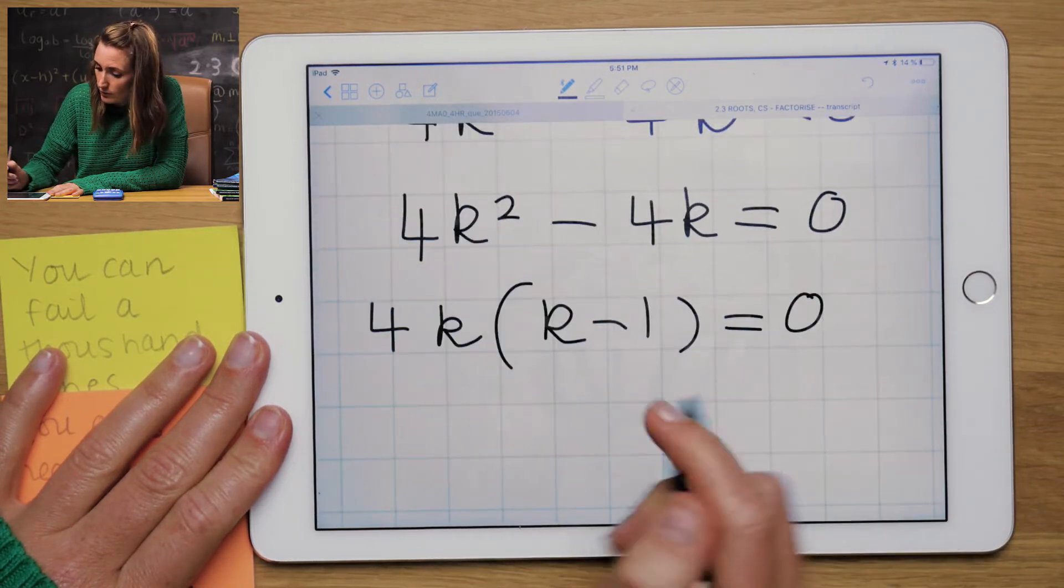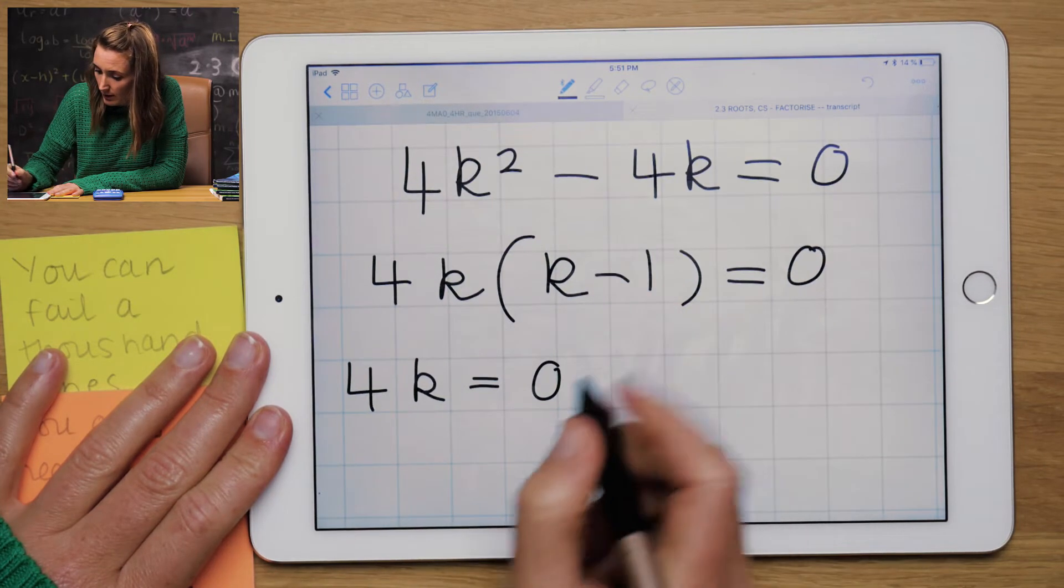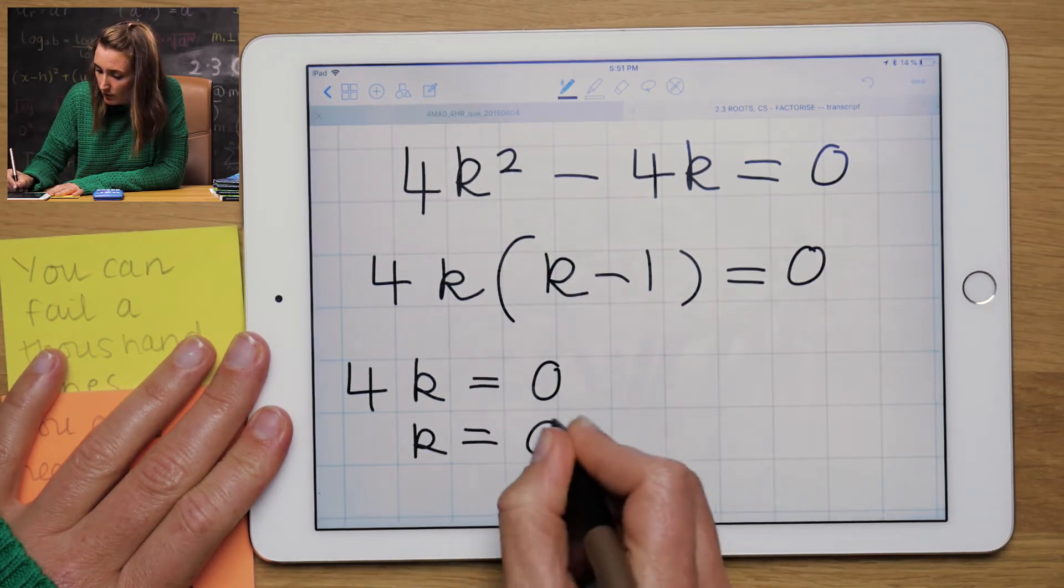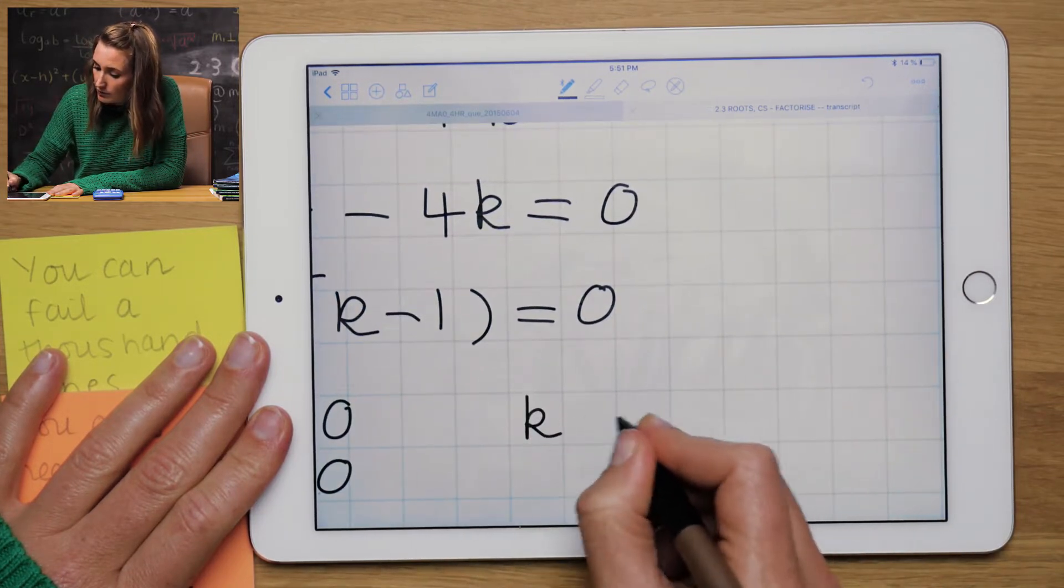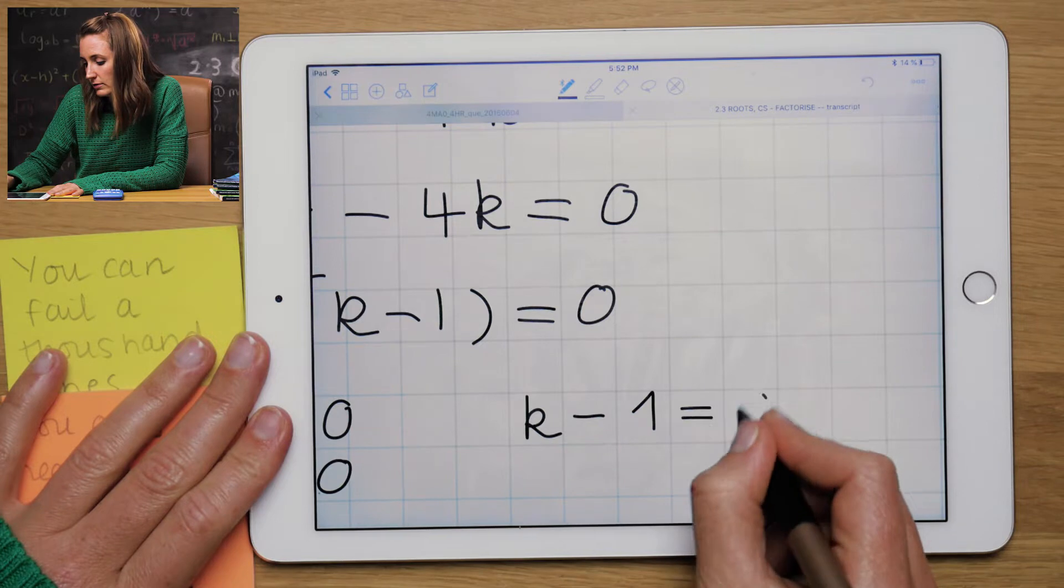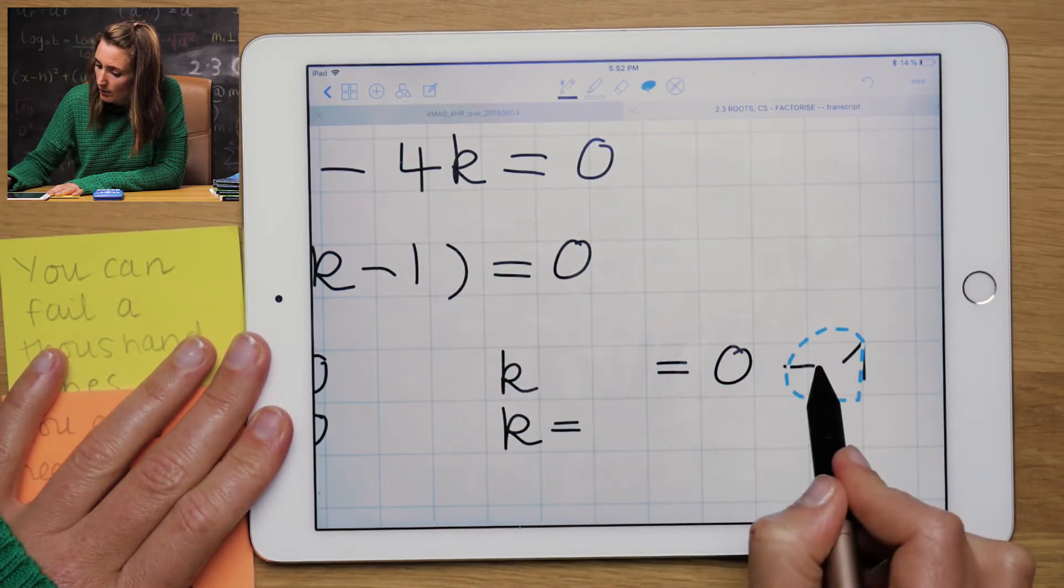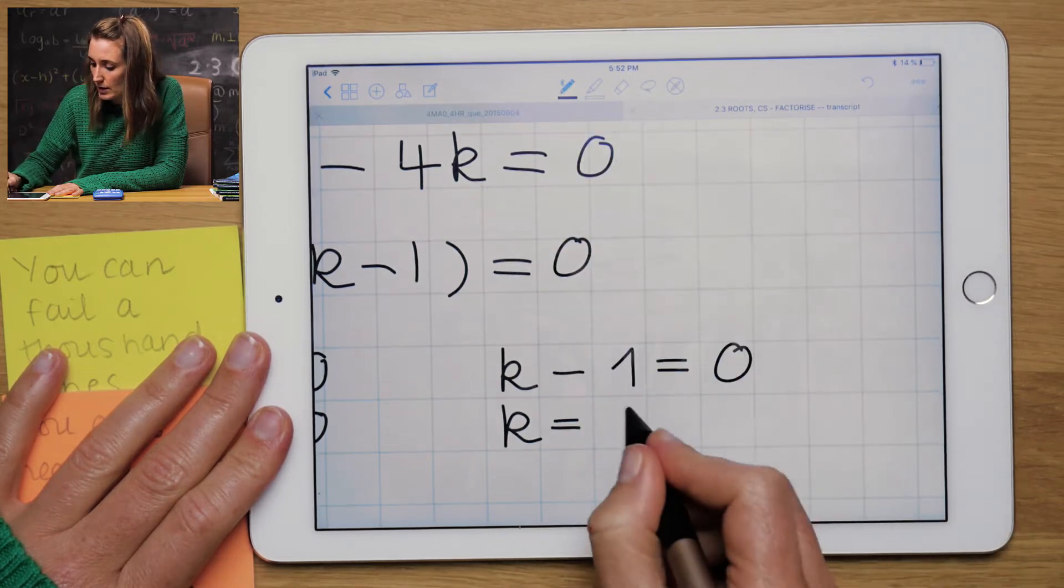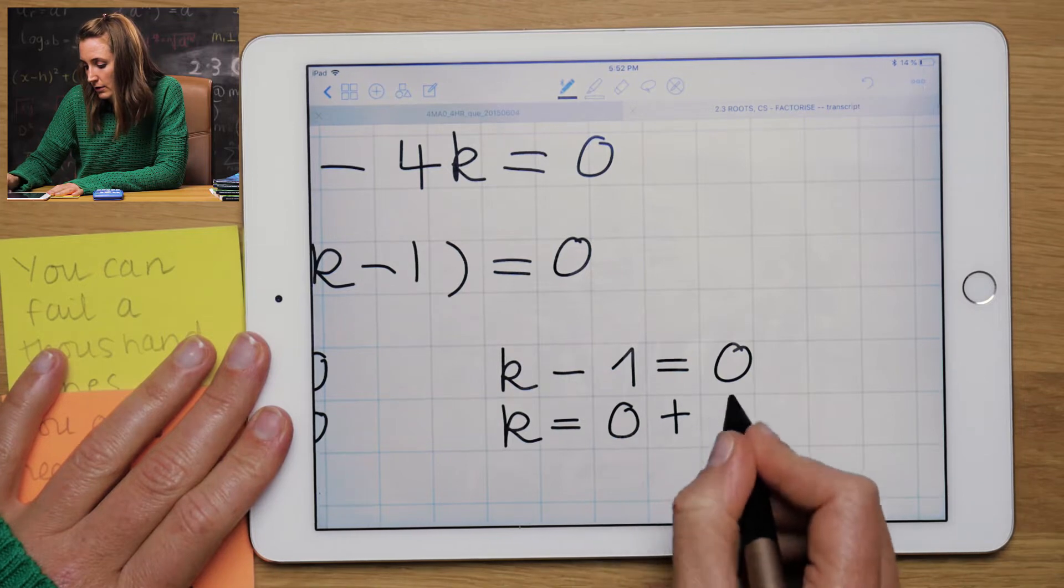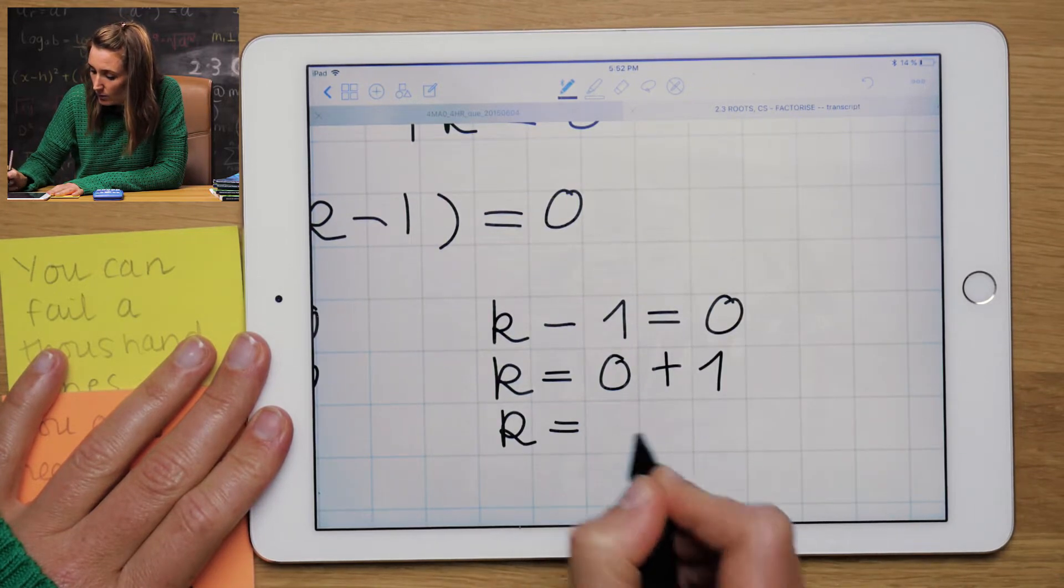And we get the two roots. So I'm going to factor out, you take out the highest common factor, 4k. That gives me two solutions, 4k equals to 0, or k equals to 0. And k minus 1 equals to 0, which is k equals to 0 plus 1 or k equals to 1.